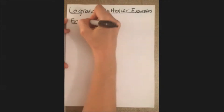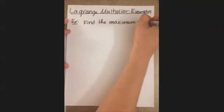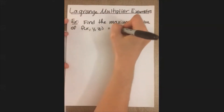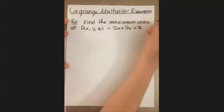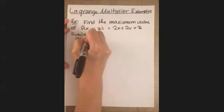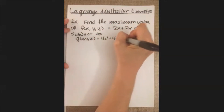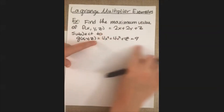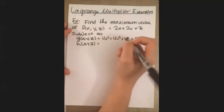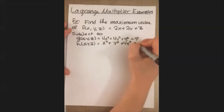In this example, we are going to find the maximum value of a function f(x, y, z) = 2x + 2y + z, and that this is subject to two functions: g(x, y, z) = 4x² + 4y² + z² = 9, which is our main constraint, and then a second constraint h(x, y, z): x² + y² + 4z² = 9 as well.